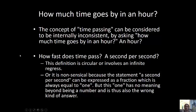How much time goes by in an hour? The concept of time passing can be considered to be internally inconsistent by asking how much time goes by in an hour. An hour? How fast does time pass? A second per second? So the definition is circular. How fast is a second? A second. So there's this problem of a circular definition. It doesn't get us anywhere. It's a nonsensical definition because the statement, a second per second, can be expressed as a fraction which is always equal to one. But this one has no meaning beyond being a number. And is that also the wrong kind of answer? I like that. That's Ted Sider.